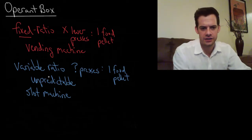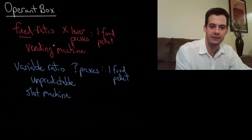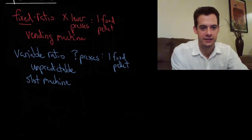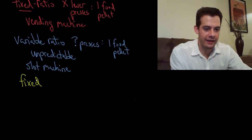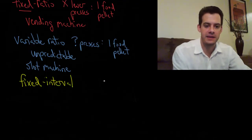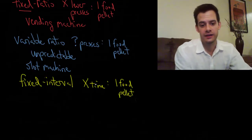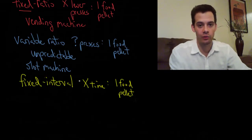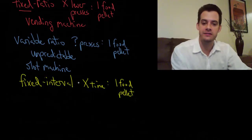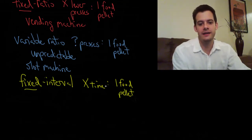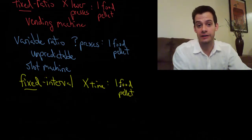The next two schedules involve changing the time interval rather than the ratio. In a fixed interval schedule, a food pellet is only available once every set amount of time — say every two minutes. You still have to press the lever to get it, but once you get it you have to wait until another two minutes has passed before you can get the next one.